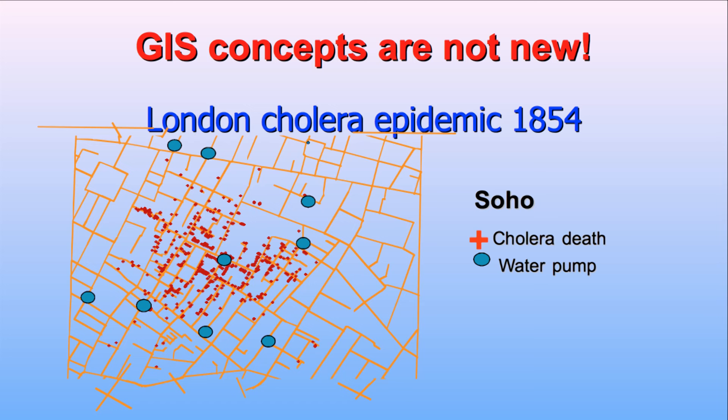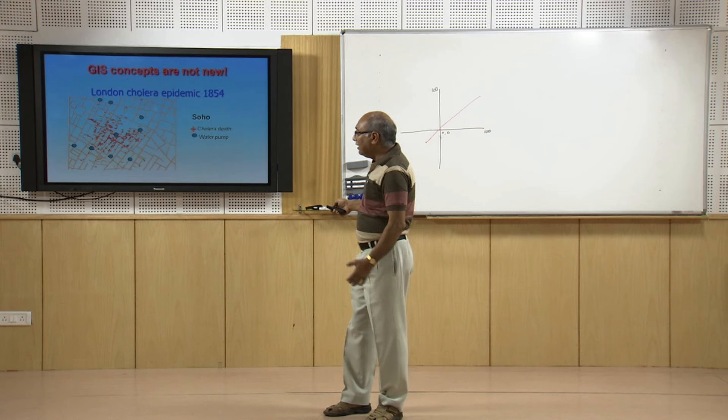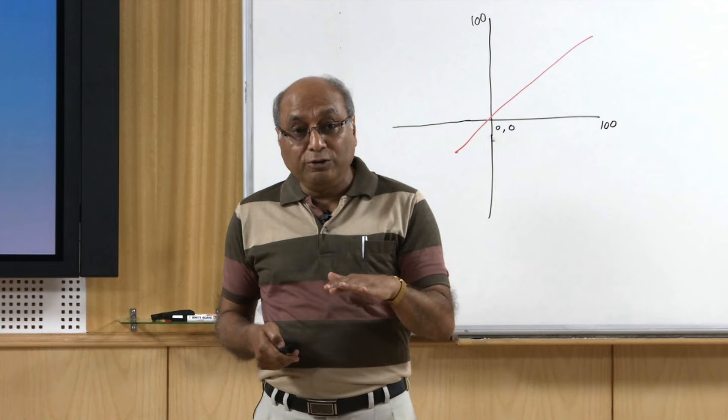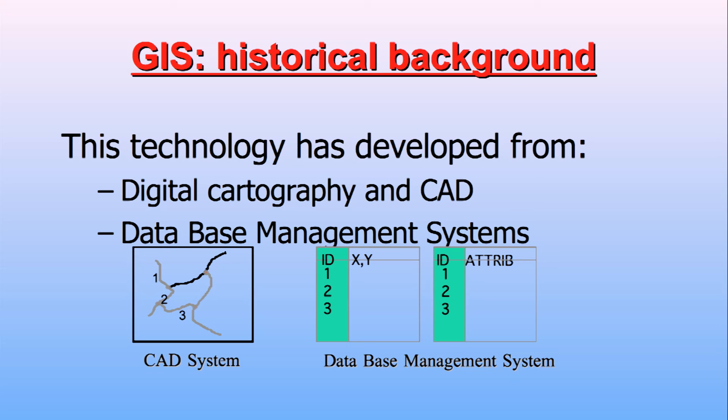Once the data is plotted, one can immediately raise the question: why are the cholera deaths surrounding this area and not others? One layer is not sufficient — as seen here, three layers of information or themes are present: the street map, deaths due to cholera, and the tube well locations. In GIS you can have several such layers. In digital systems you can have a variety of spatial data and layers of all kinds, which we will learn in this course.